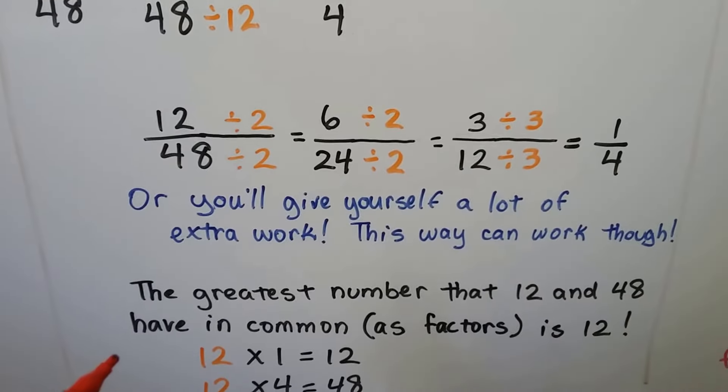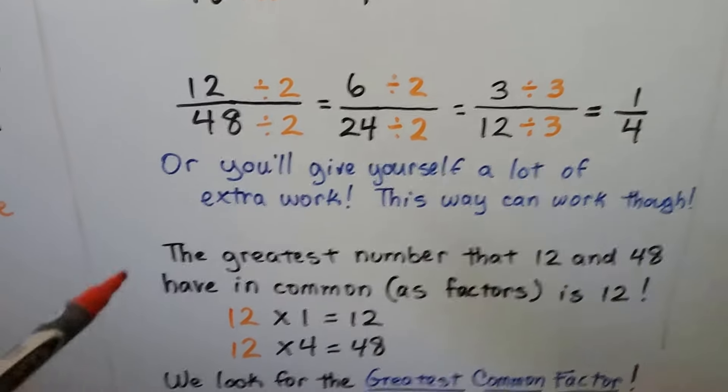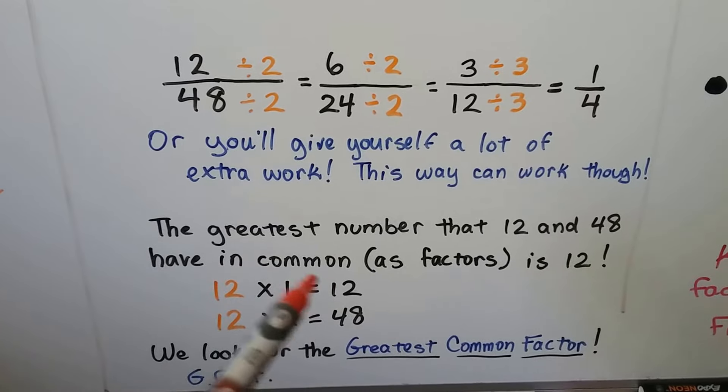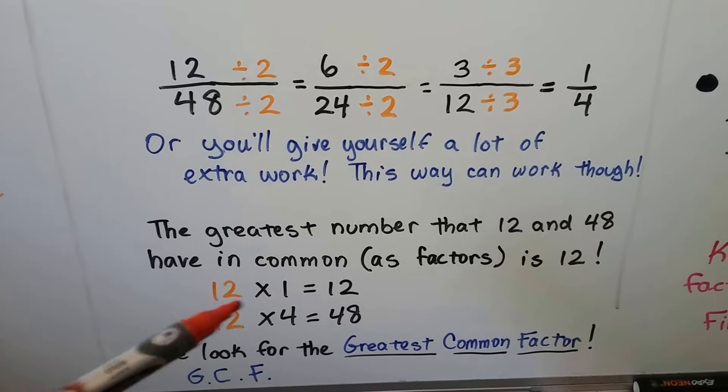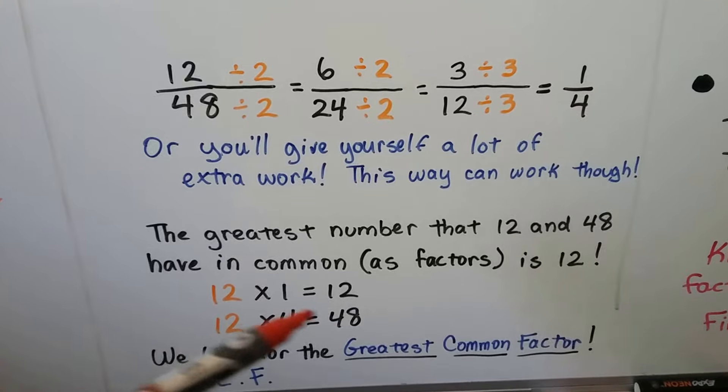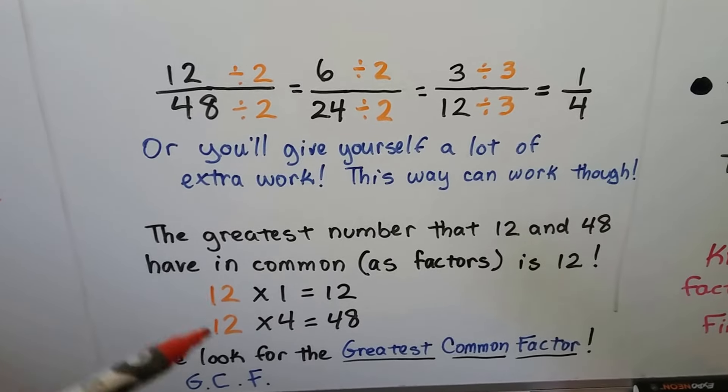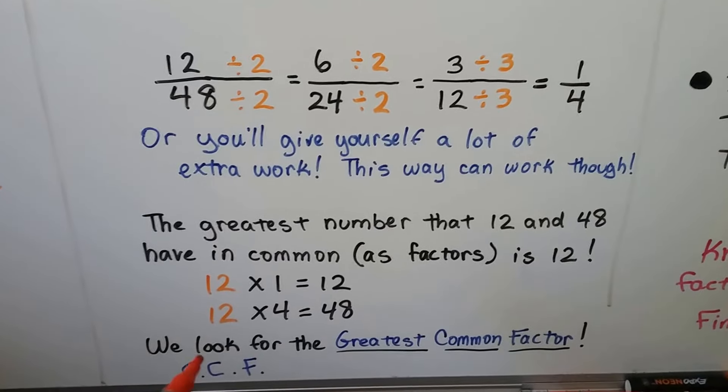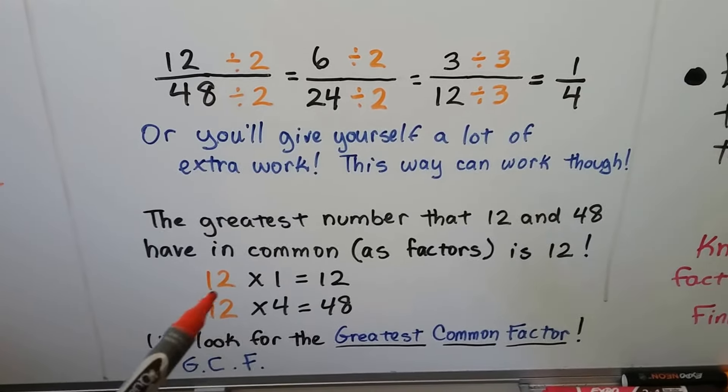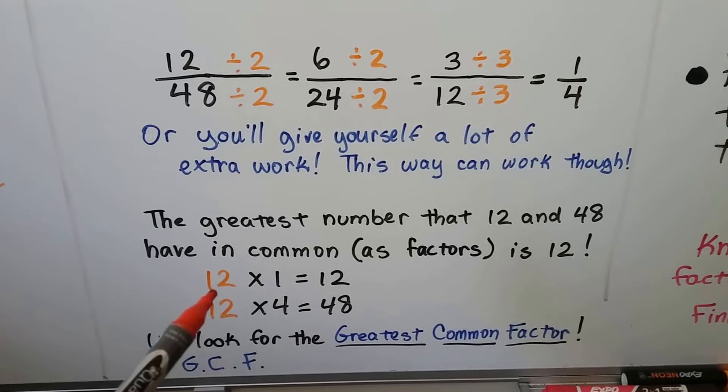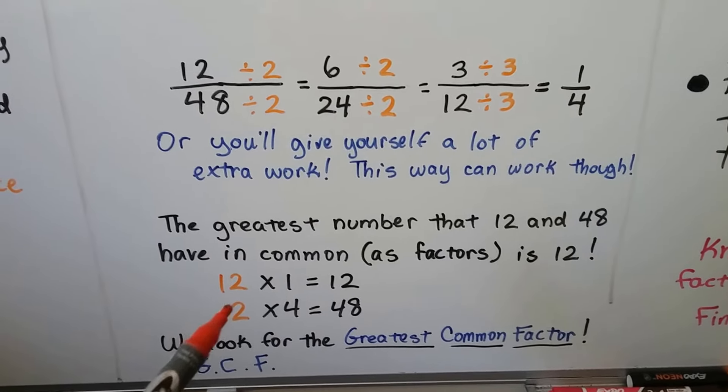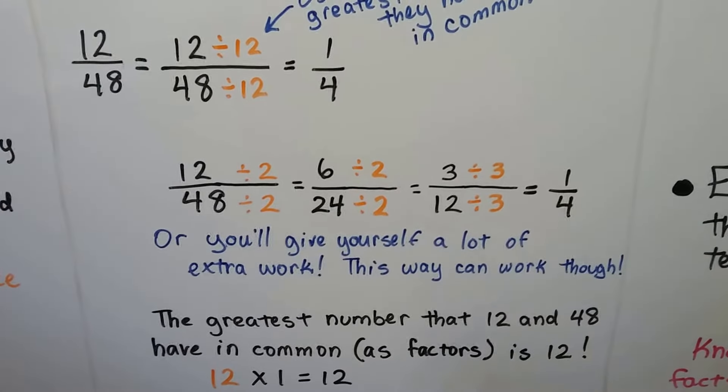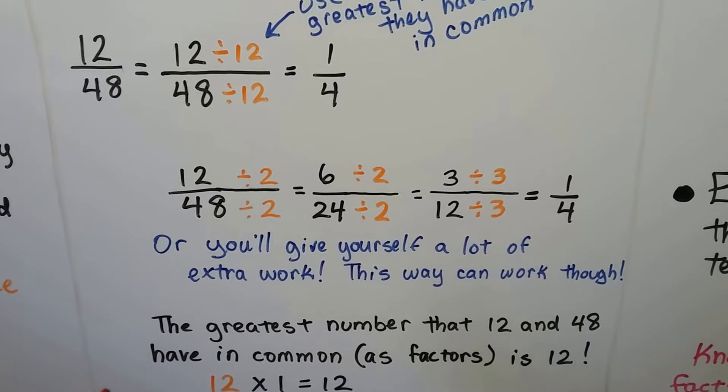And the greatest number that 12 and 48 have in common as factors, remember, factors are the facts. They're what you multiply together to get the answer. So 12 times 1 is 12 and 12 times 4 is 48. So 12 and 48 have a 12 in common. That's the greatest common factor. And if you've heard of that before, that's what it is. It's that GCF. That greatest number that they have in common as factors is the greatest common factor. So we just try to find the biggest number that they have in common.